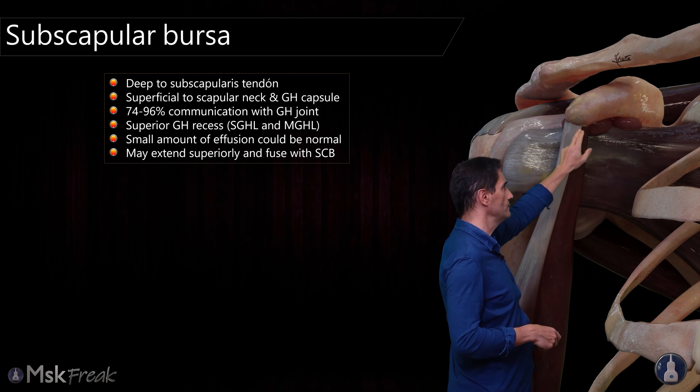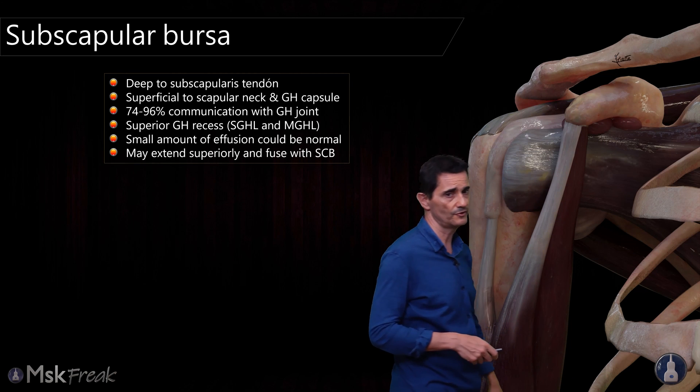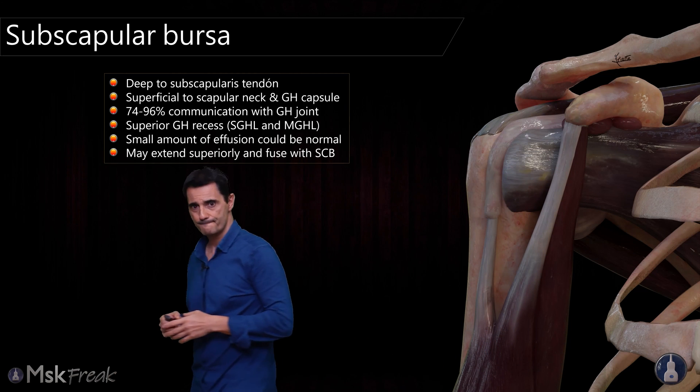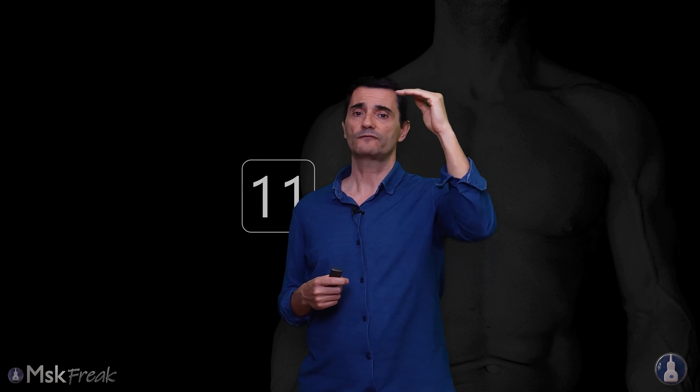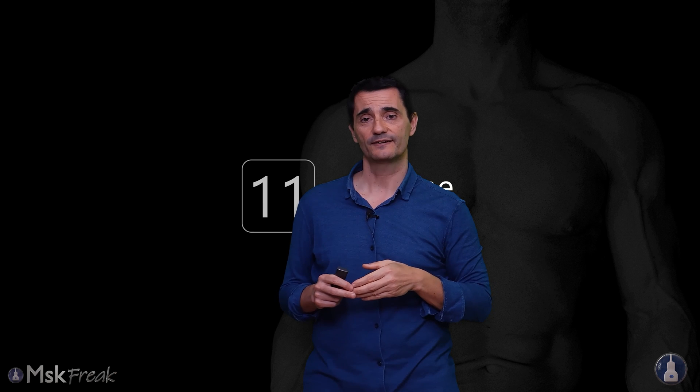Sometimes you will see the fusion between the subcoracoid bursa and the subscapular bursa. To recap: the coracobrachial bursa will be between the coracoid process and anterior to the subscapularis; the subcoracoid bursa is deep to the coracoid process and cranial to the subscapularis; and the subscapular bursa is deep to the subscapularis and may be an anterior recess of the glenohumeral joint. I hope this helps you to understand these bursae. Now let's move to the ultrasound of these structures.